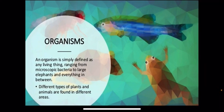Next topic is organisms. An organism is simply defined as a living thing ranging from microscopic bacteria to large elephants and everything in between. Different types of plants and animals are found in different areas.